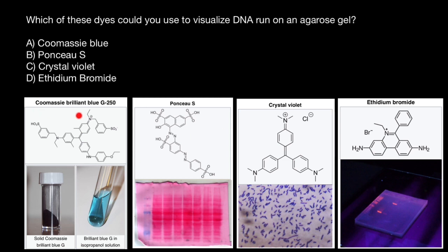Coomassie Brilliant Blue is the name of two similar triphenylmethane dyes that were developed for use in the textile industry, but are now commonly used for staining proteins in analytical biochemistry — and we're looking for dyes which stain DNA. Coomassie Brilliant Blue G250 differs from Coomassie Brilliant Blue R250 by the addition of two methyl groups. The suffix R stands for red, as the blue color has a slight reddish tint, while the G variant has a more greenish tint. The 250 originally denoted the purity of the dye. So as you see, this is not a dye we are going to use to stain DNA.